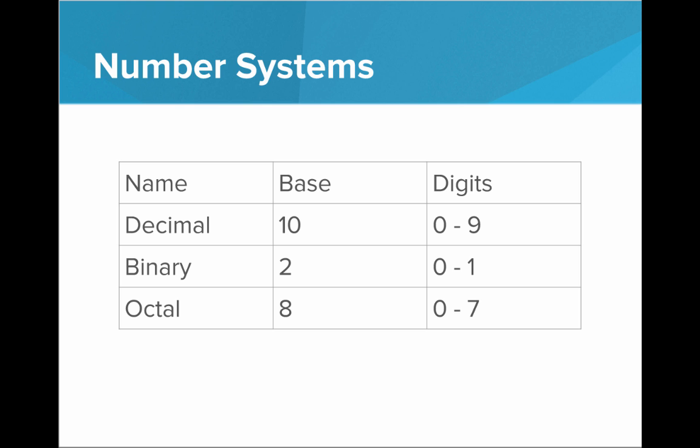So to recap, there's a number system for every base. We're very familiar with the decimal system that's base 10, and that uses the digits 0 through 9, 10 different digits. We also have the binary system, which is base 2, and that only uses 2 digits, 0 and 1.